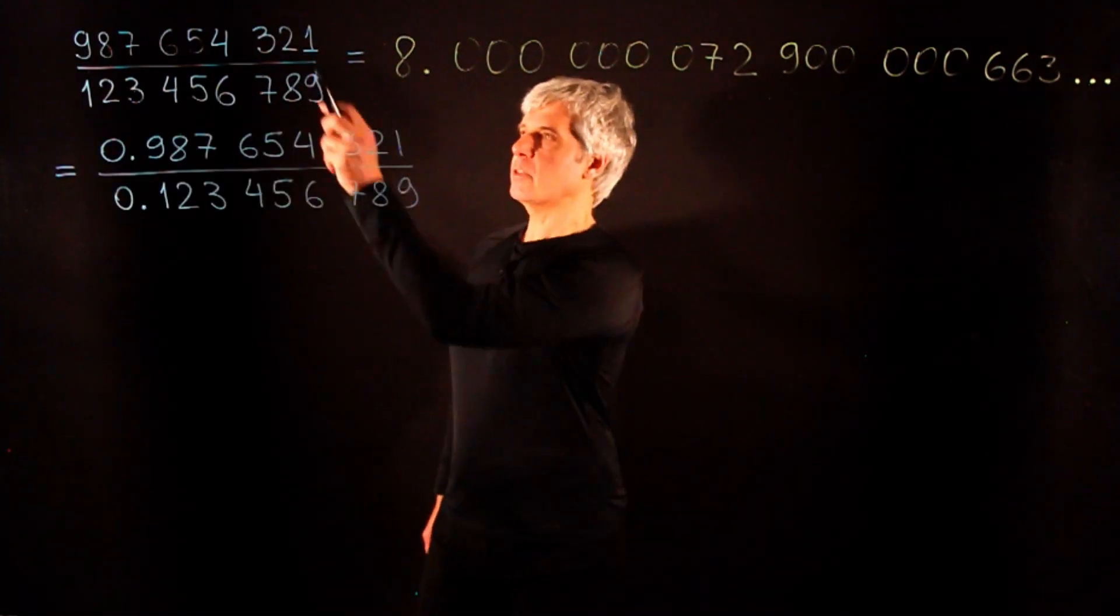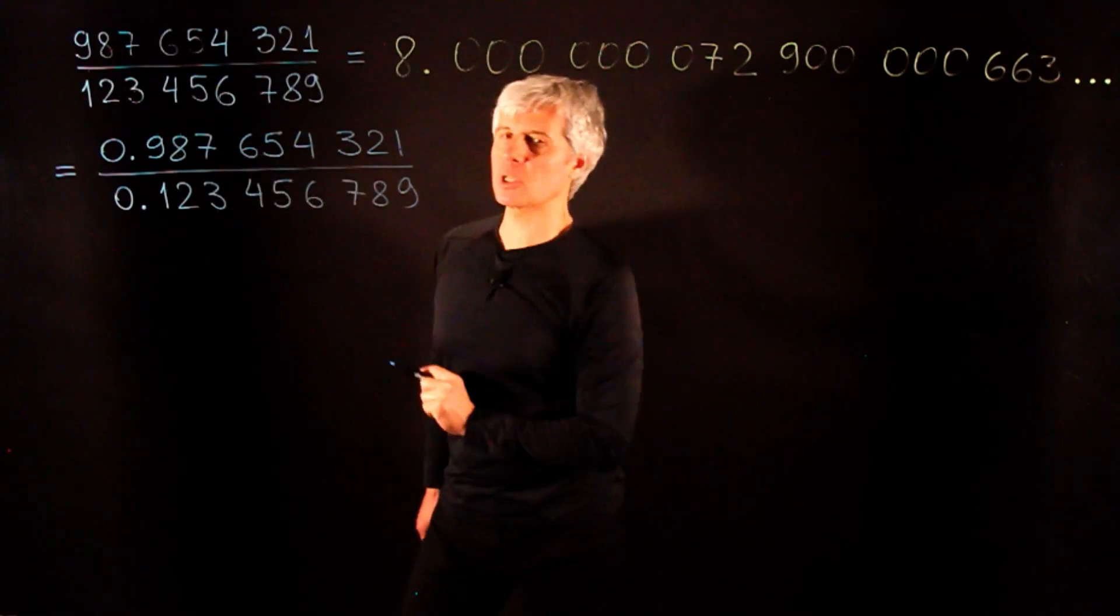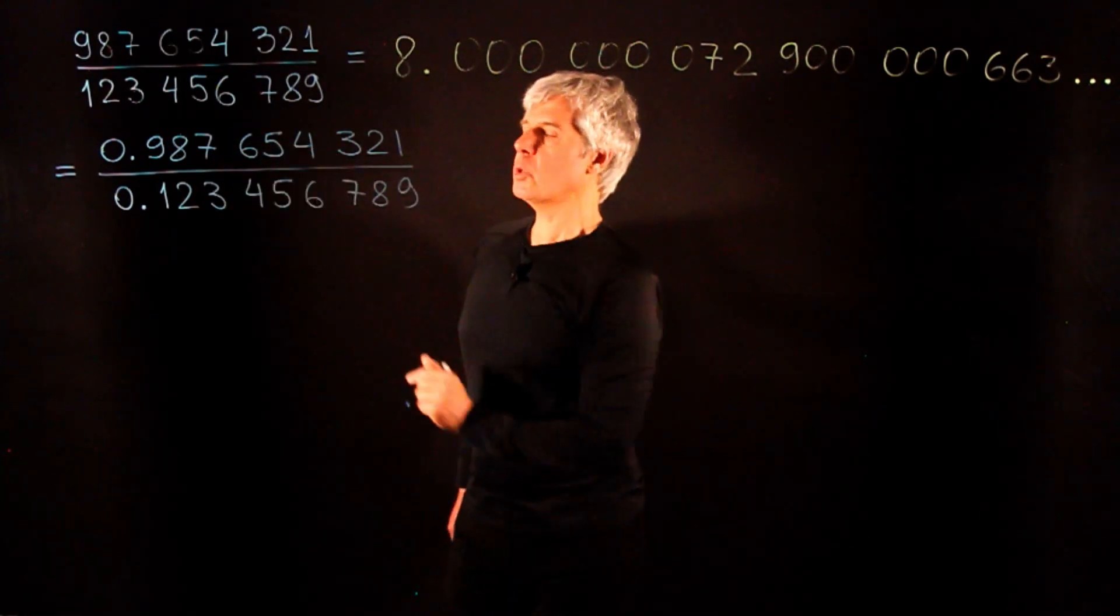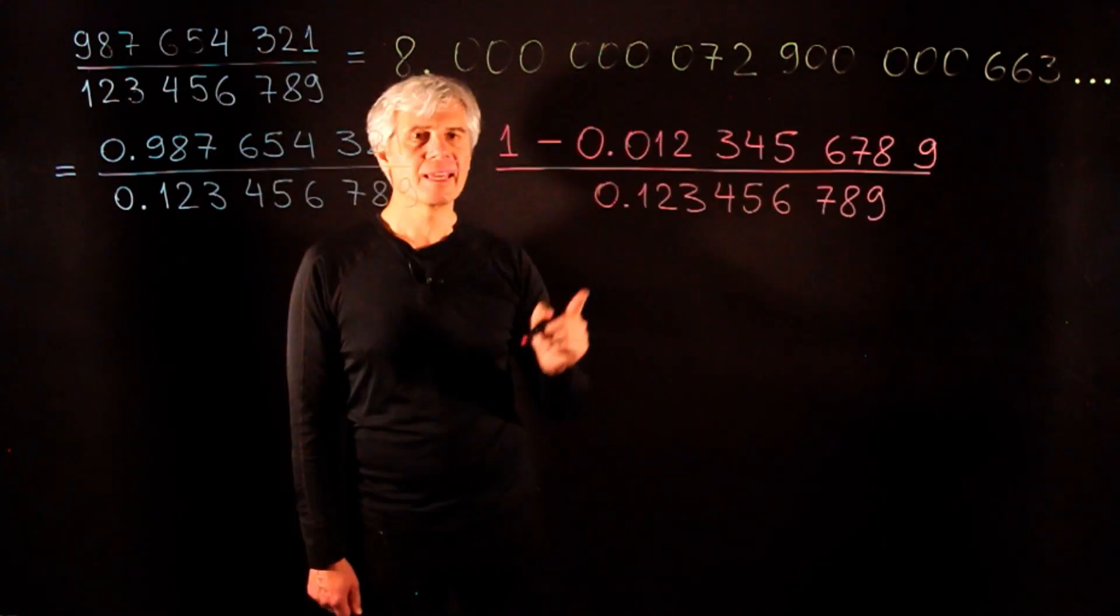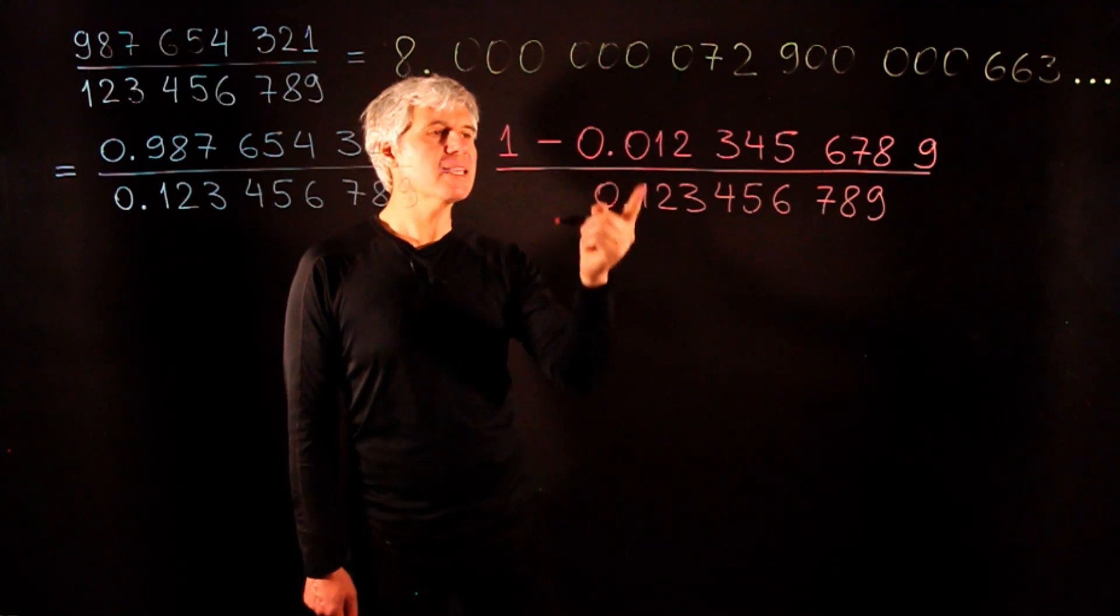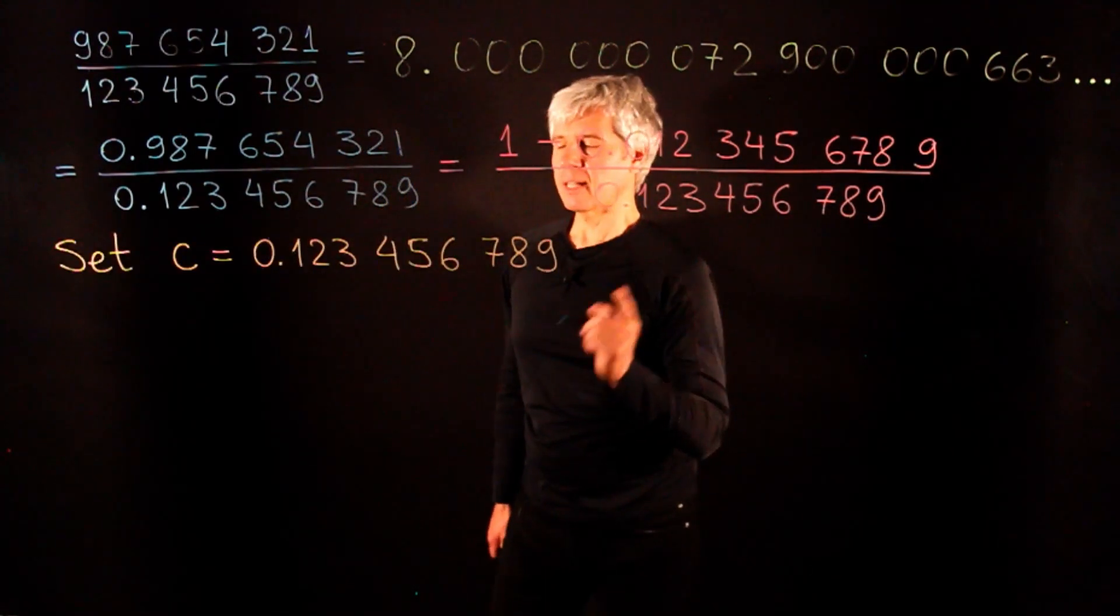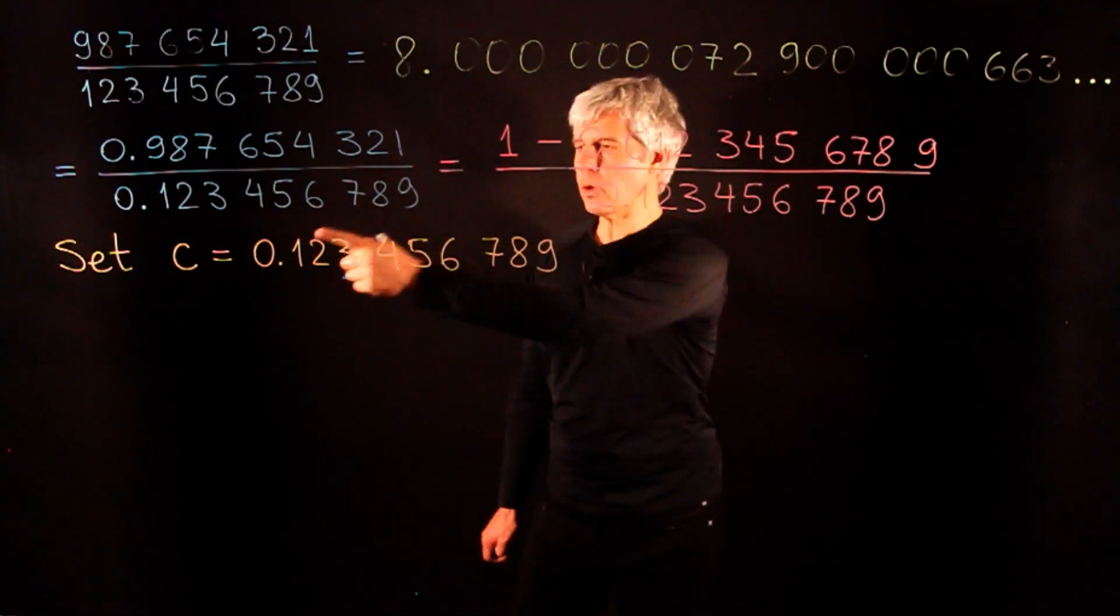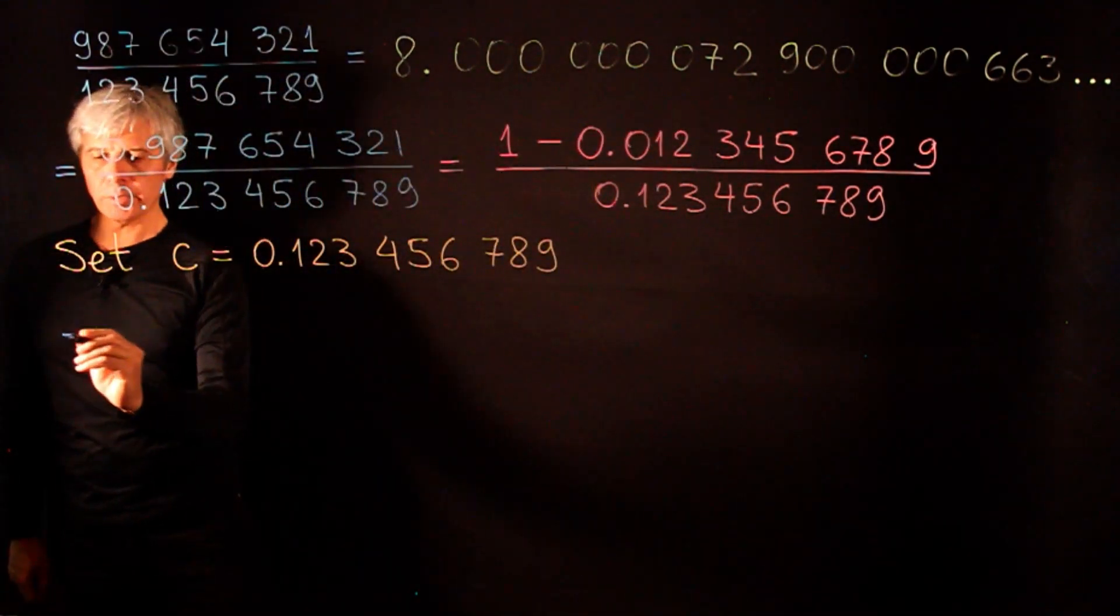First, let us divide numerator and denominator by an appropriate power of 10 to bring it to this form. The numerator here is close to 1, so let us write it as 1 minus something. It's easy to see that in the numerator we are subtracting precisely 1 tenth of the denominator. To simplify annotations, let us denote the constant in the denominator by c. Then what we have here is the following expression.